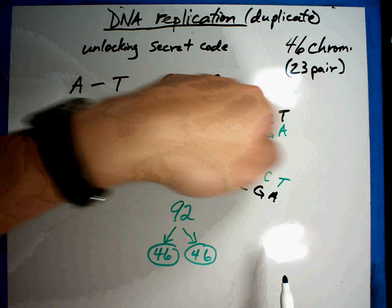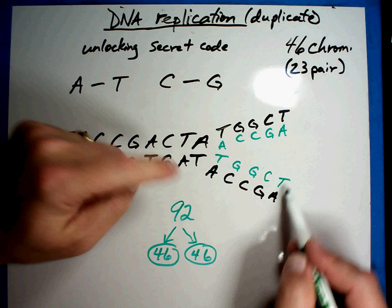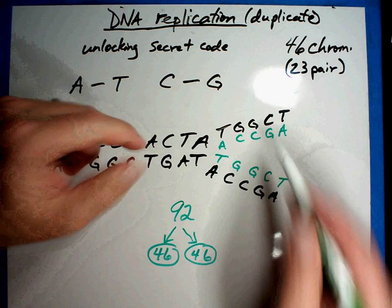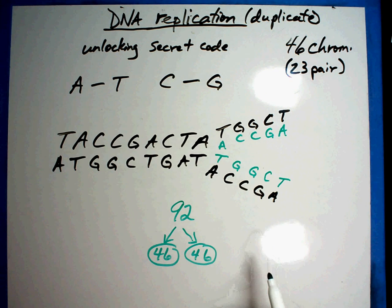You take the DNA, you unzip it, you plug in the parts that are floating around like Velcro. And by the time you've unzipped it all the way to the end, you now have two sets that look identical to each other.